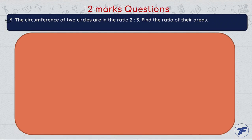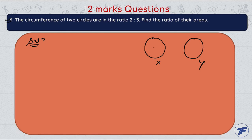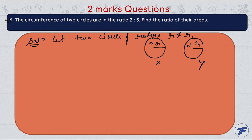Now let's come to question number 5: the circumferences of two circles are in the ratio 2:3. Find the ratio of their areas. Suppose we have two circles X and Y. The center of the first circle is O and radius is r, and the center of the second circle is O-dash with radius r1. Let two circles have radius r and r1.